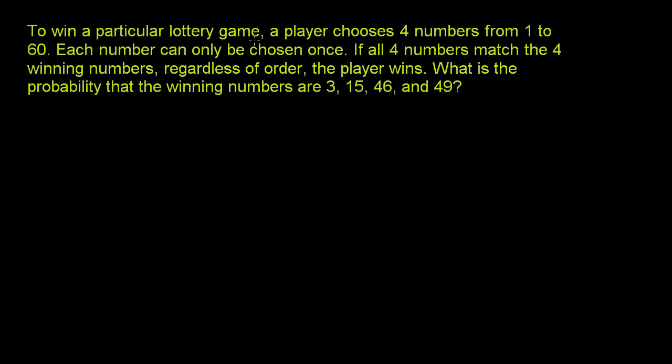To win a particular lottery game, a player chooses four numbers from 1 to 60. Each number can only be chosen once. If all four numbers match the four winning numbers, regardless of order, the player wins. What is the probability that the winning numbers are 3, 15, 46, and 49?